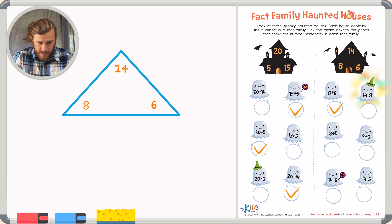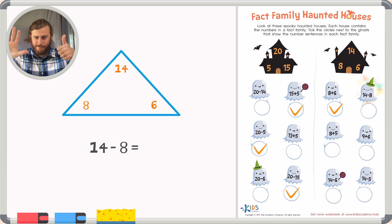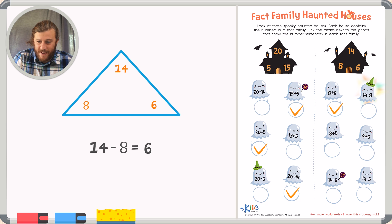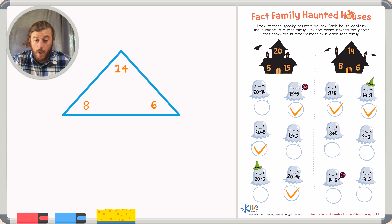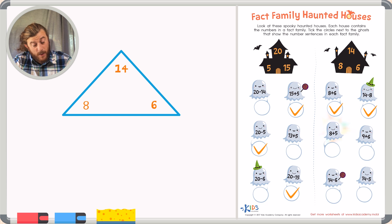Our next problem is 14 minus 8. Again, 14 and 8 are two numbers that belong inside the fact family, but let's subtract to make sure the answer is 6. Counting up: 8, 9, 10, 11, 12, 13, 14 — we have our answer of 6. So 14 minus 8 is correct. Next: 8 plus 5. The number 5 does not belong in my fact family, so immediately I know this is not correct. Same goes for 9 plus 6 — the number 9 is not in our fact family, so this is not correct either.